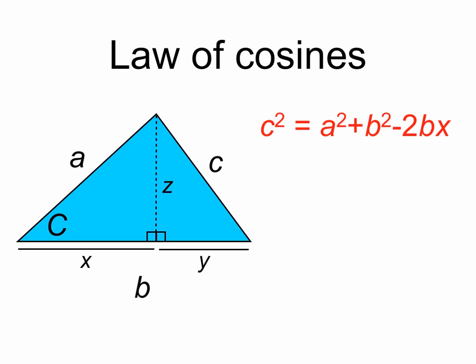Now we want to get rid of this x term since the law of cosines only involves the lengths of the sides of the triangle, a, b, and c, and the angle C. So we want to get rid of this x.